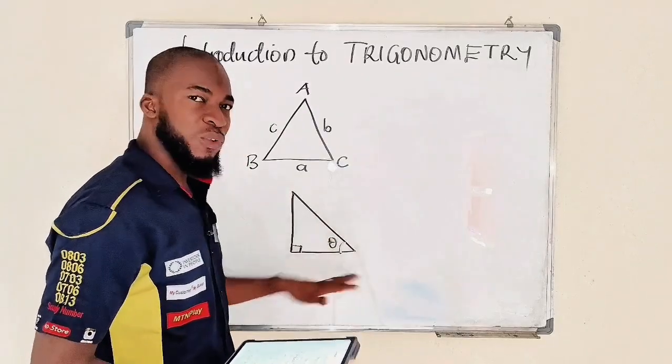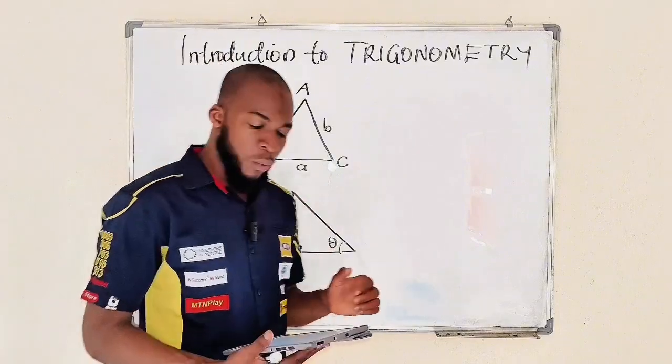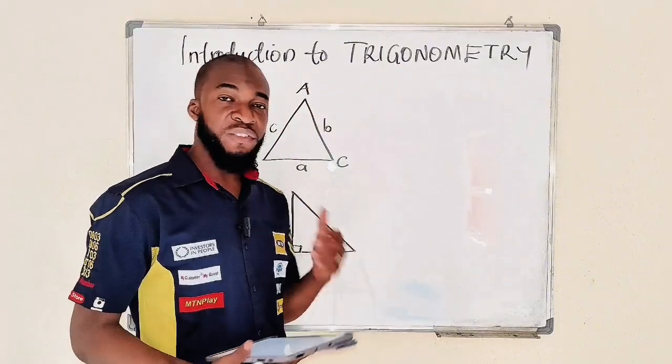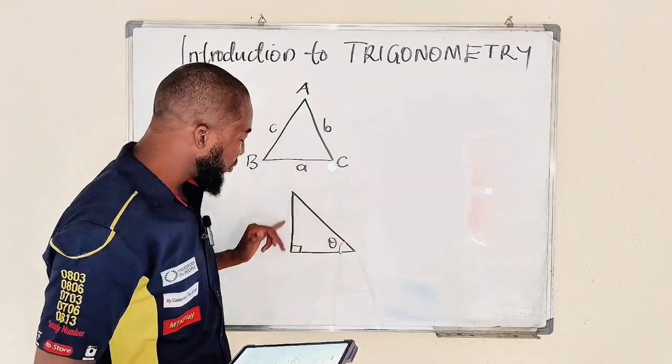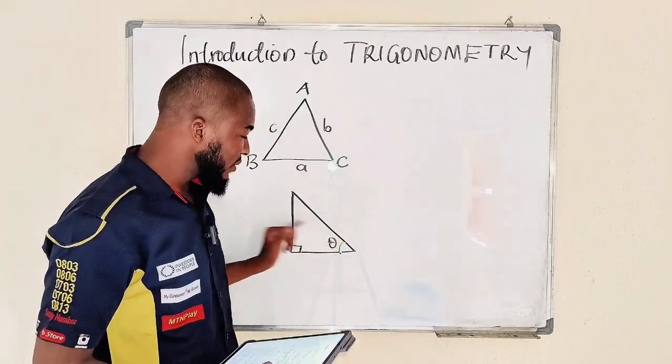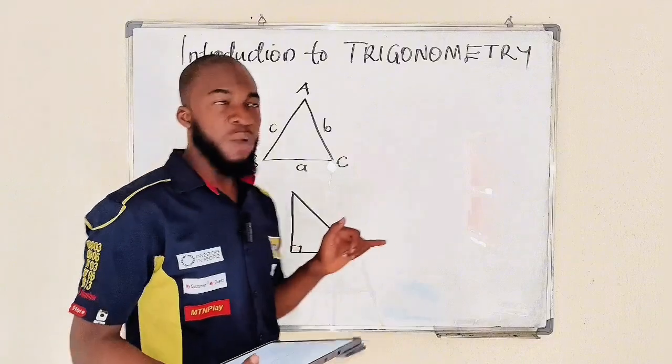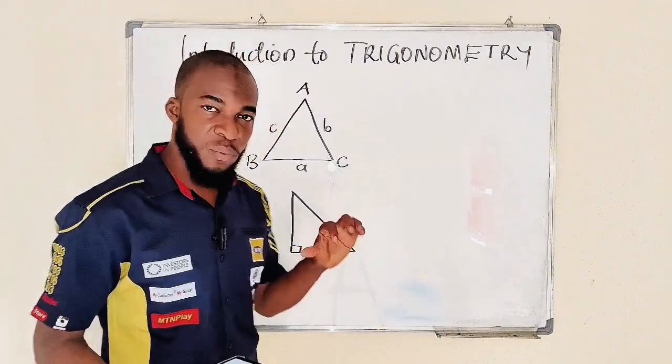We are going to talk about trigonometric ratios, which is a concept that deals with the relationship between the angles—the interior angles—and the side lengths. And we have like six trigonometric ratios.